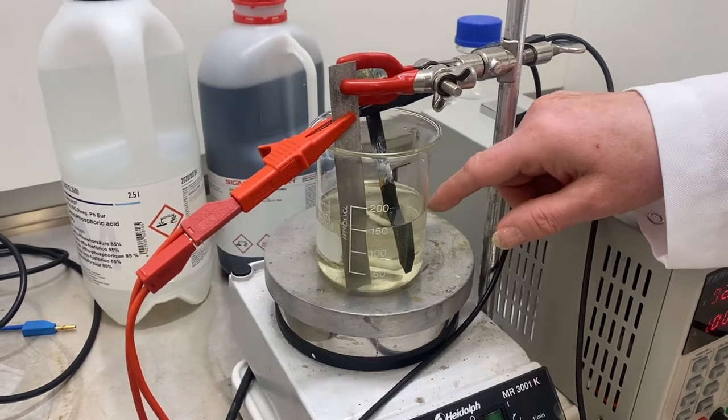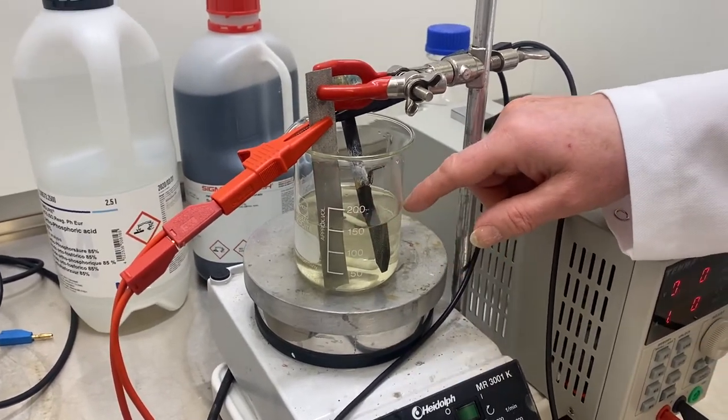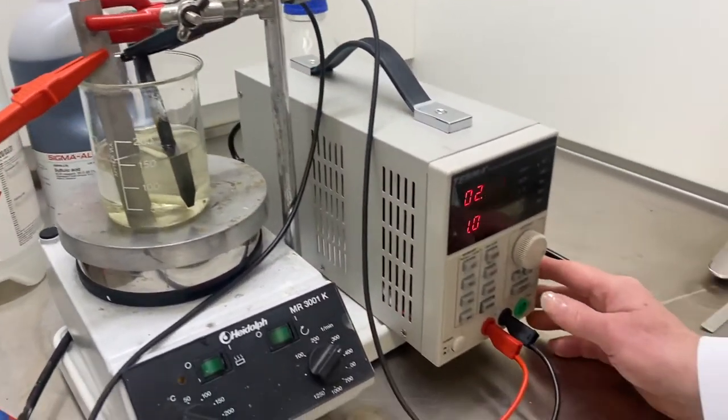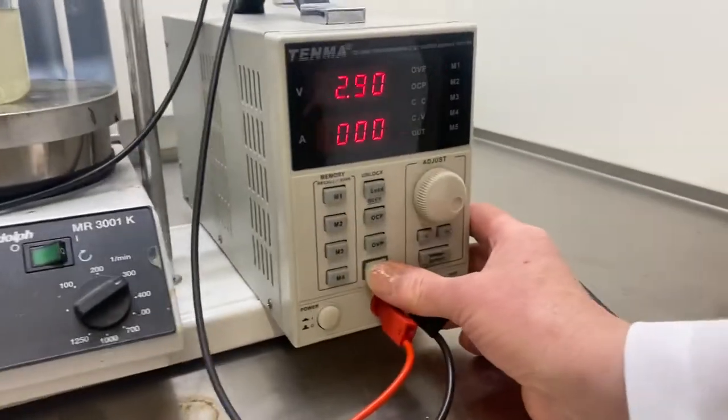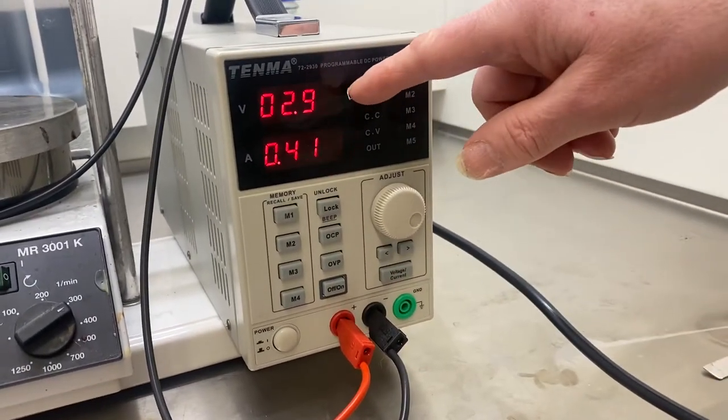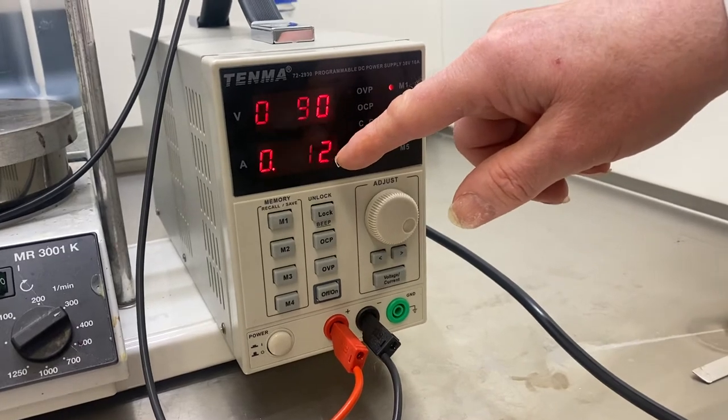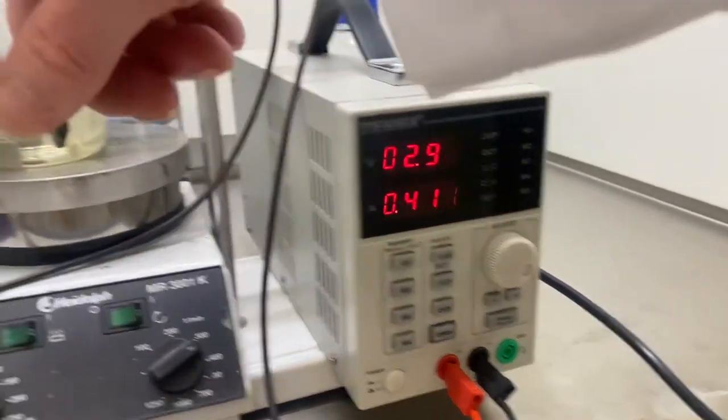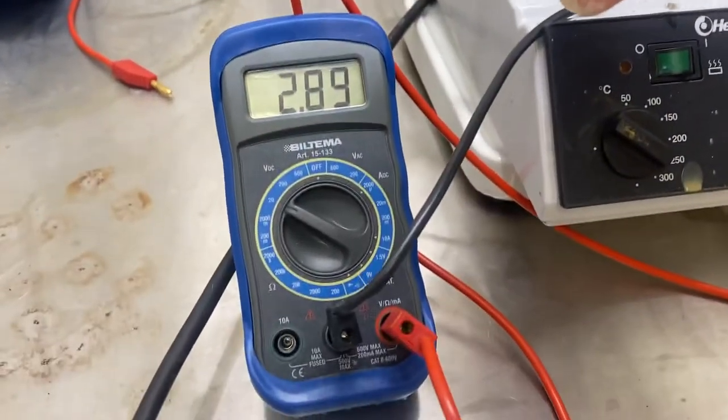If I just switch on the power supply now, we've set it to 2.9 volts and 0.412 amps. If you look on the other voltmeter you can see it says 2.89 volts across the electrodes.